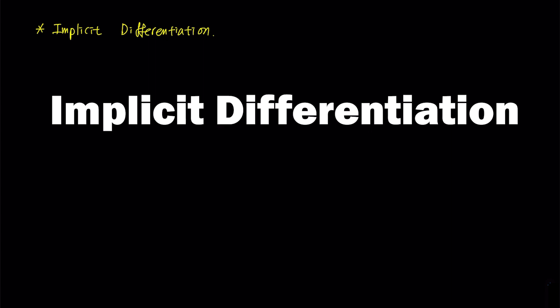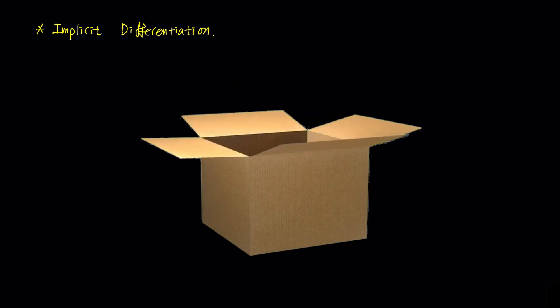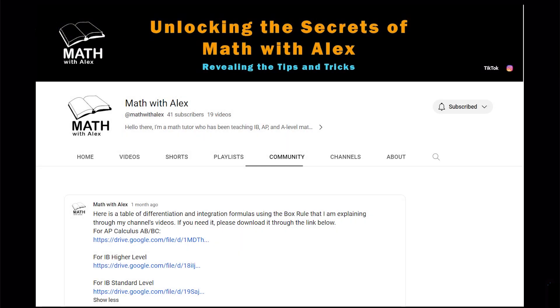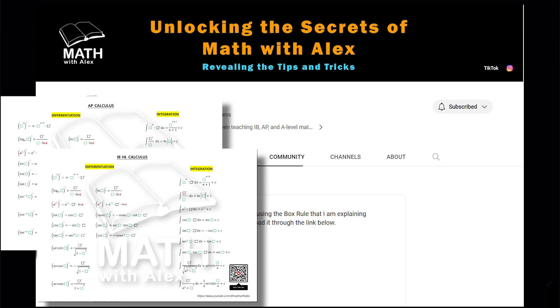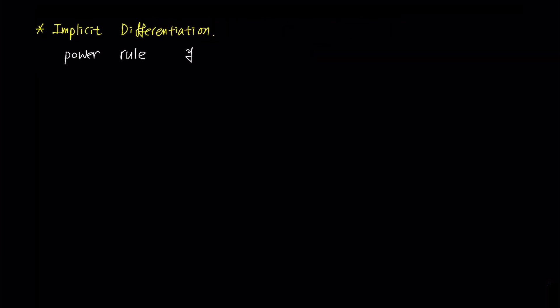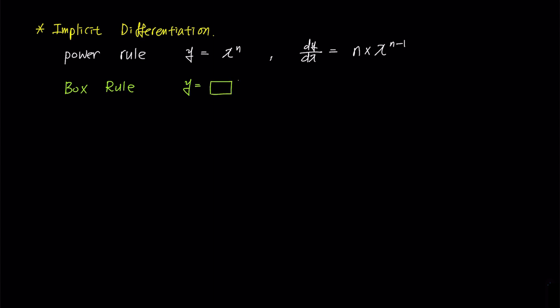Before I begin the explanation, let me introduce you to the modified power rule that I use for differentiation. As I frequently use a box in my equation, for convenience I refer to it as the box rule. You can find a chart of the box rule formulas on the community tab of my YouTube channel. The general power rule states: when y equals x to the power of n, the derivative is n times x to the power of n minus 1. In the box rule, when y equals box to the power of n, the derivative is n times box to the power of n minus 1 times box prime, where box prime is a new term multiplied at the end representing the derivative of the box term. This is a method used to quickly differentiate without using the chain rule.